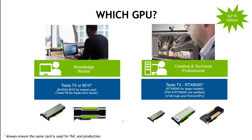For mid-range creative users — video editing, basic visual effects, construction, or engineering — the RTX 6000 is the next step, preferred over the P40 since it's about 1.5x more performant, slightly lower cost, and has the same 24 GB frame buffer. The RTX 8000 offers 48 GB instead of 24 GB, better for very large data models. The V100 is the top-end data science card, suited for high-performance computing and virtual compute server licensing, potentially running Linux workloads.